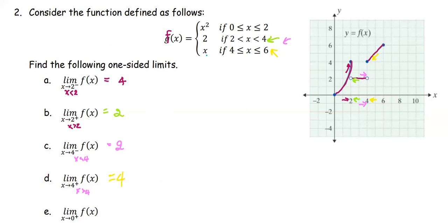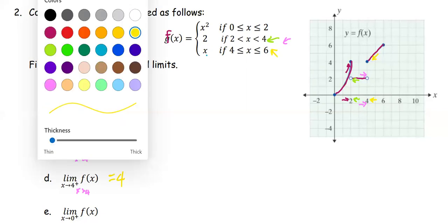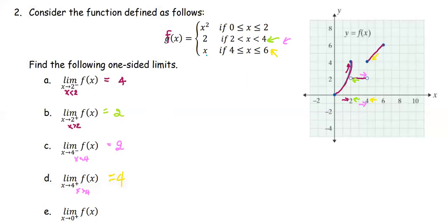For the last one, we look at the limit as x approaches 0 from the right. Here, x is going to be slightly greater than 0. If x is slightly greater than 0, we look at the direction of the graph coming toward the value 0. So the answer is 0.